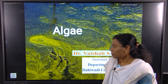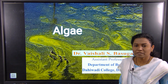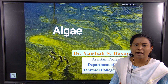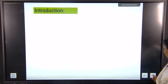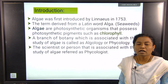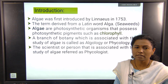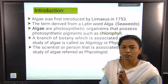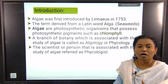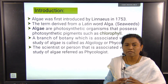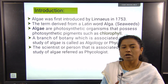Algae are well known as ubiquitous organisms — their distribution is all over, though they generally prefer aquatic environments. Algae were first introduced by Linnaeus in 1753. It is basically a Latin word; 'alga' means the seaweed. These algae contain the chlorophyll pigment and produce their own food, making them photosynthetic organisms.